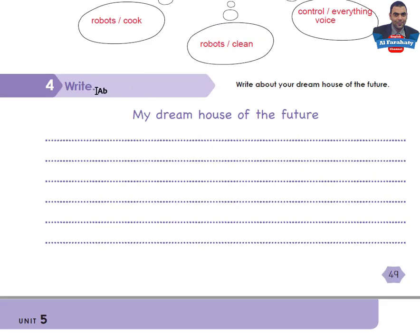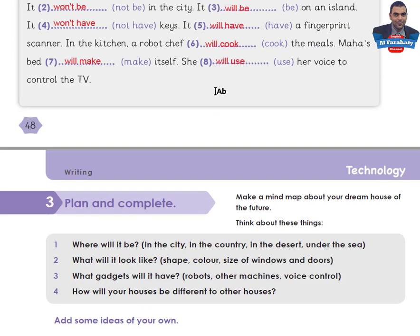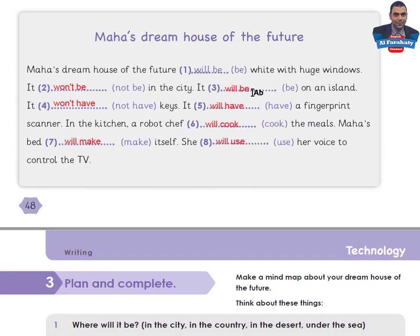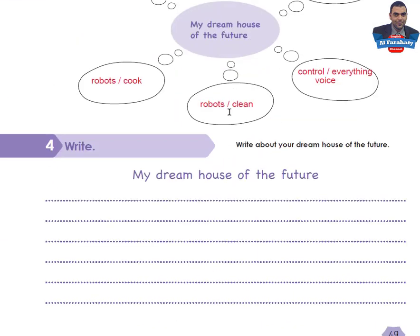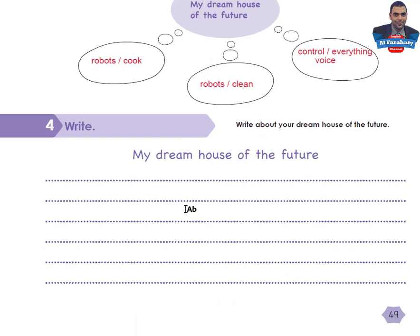Activity 4: Write. Write about your dream house of the future — 'My Dream House of the Future.' You are asked to use your mind map as a guide to write your paragraph. Take your time to write about your dream house of the future, then come back to check your answers.